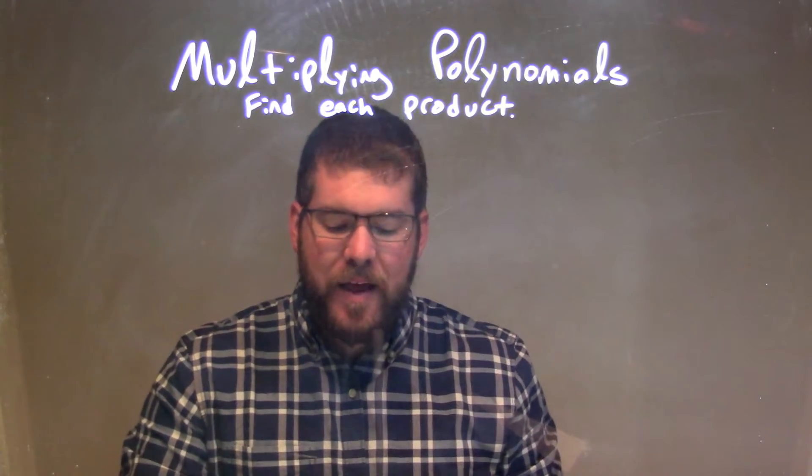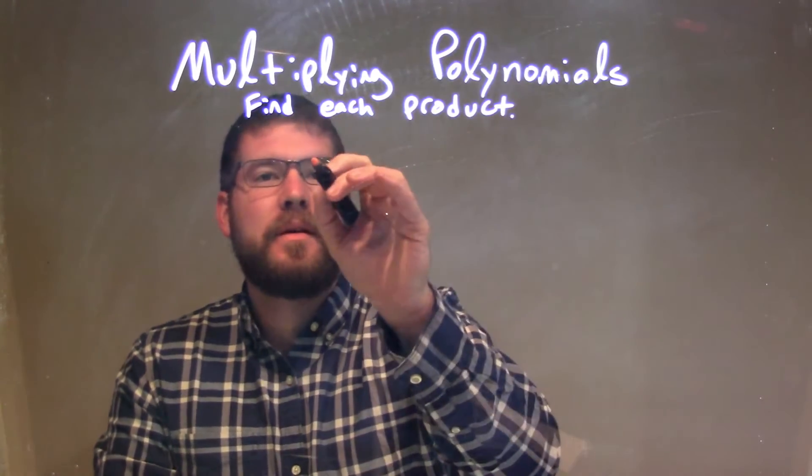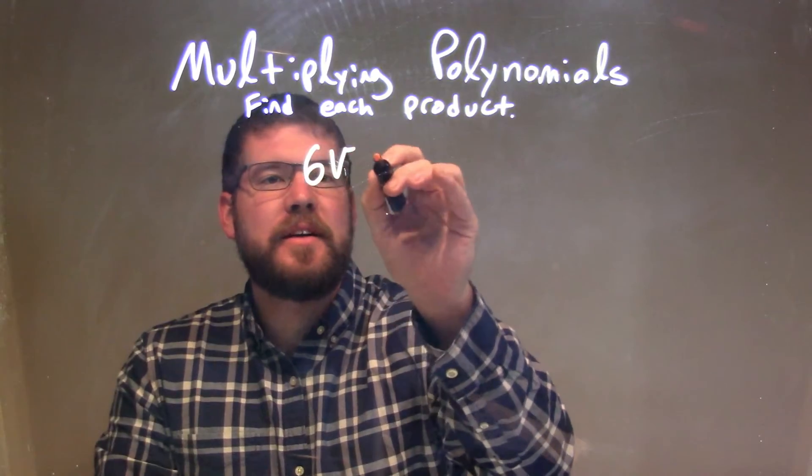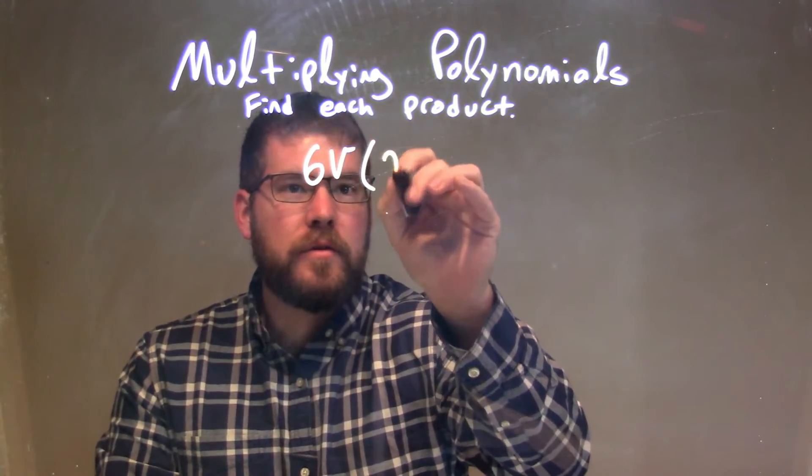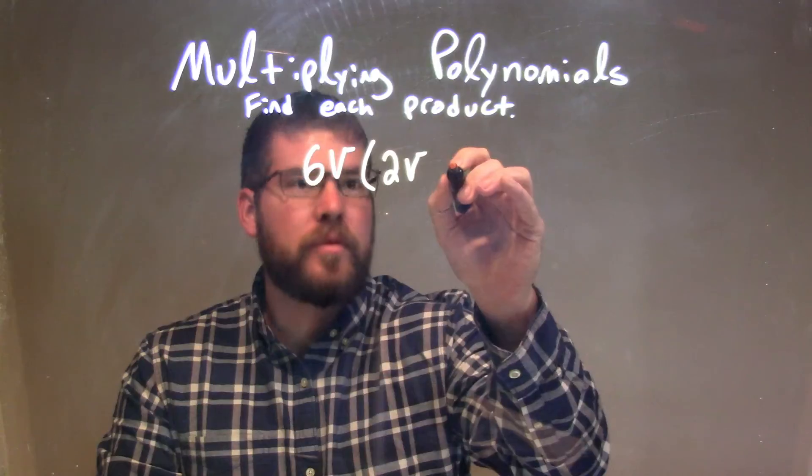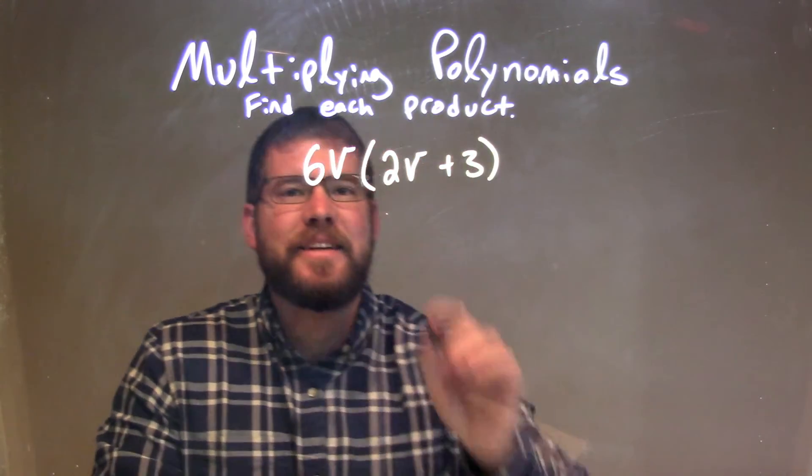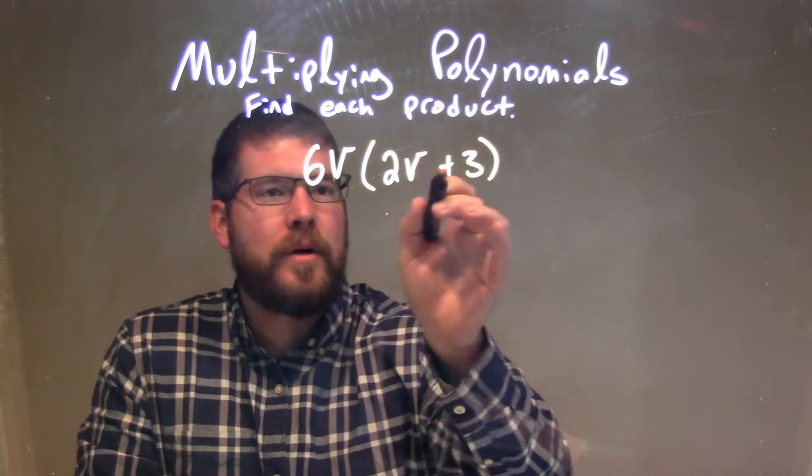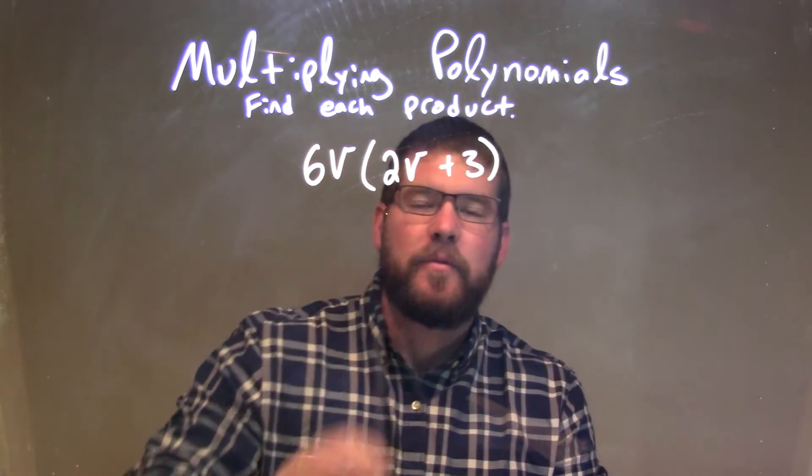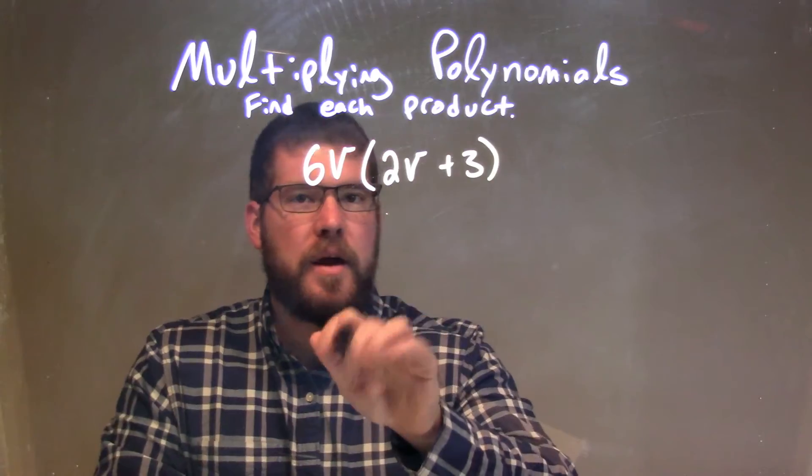So if I was given this polynomial here, 6V times 2V plus 3, what I want to do is I need to distribute the 6V when I multiply it by the 2V plus 3. There's nothing that we can simplify inside that parenthesis there.